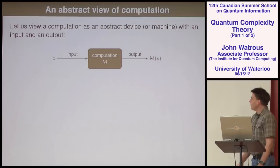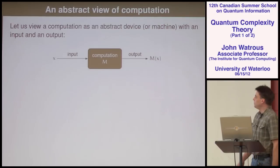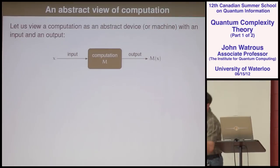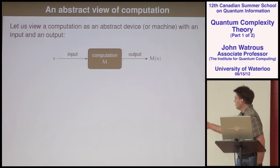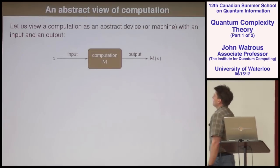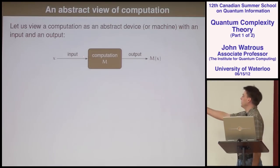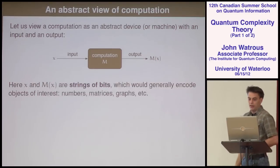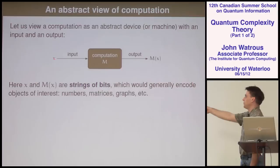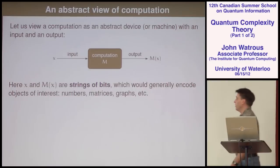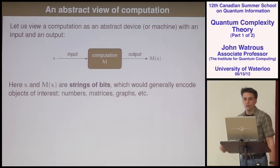Let's try to formalize things a little bit and view computation abstractly. Think of a computation or an algorithm as some device or a box. You take some input, stick it into the box, something happens, and you get an output. We're going to assume everything is encoded in bits — the input will be a bunch of bits and the output will be a bunch of bits. Maybe these bits encode things we care about like numbers or graphs.